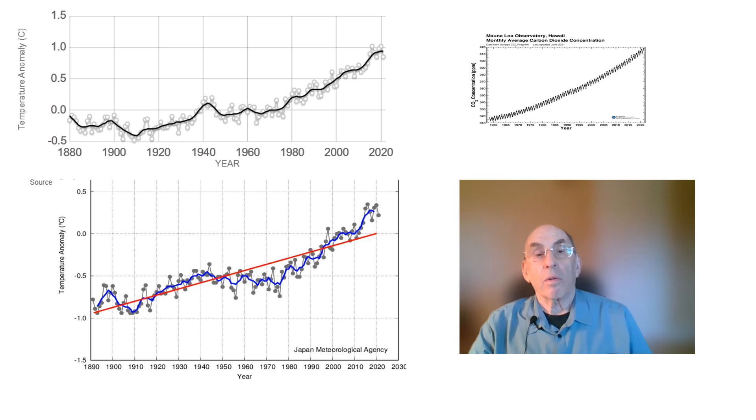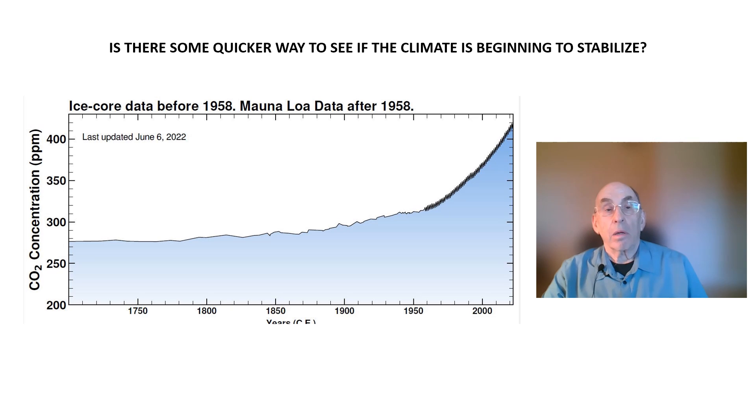In order to see if there really is a slowdown or hiatus in global warming from temperature data alone, you need to look at what is happening over 30 year periods. Thirty years clearly is a long time to wait to determine if the climate is beginning to stabilize, and it's legitimate to ask if there's some quicker way to determine if global warming is slowing down.